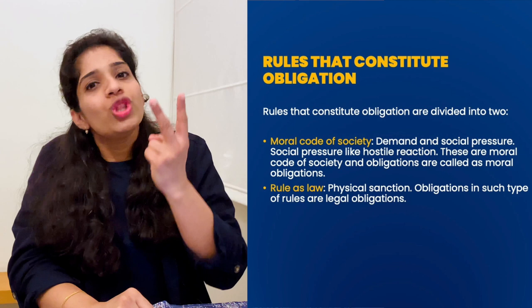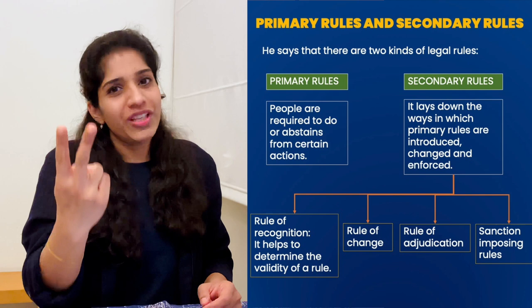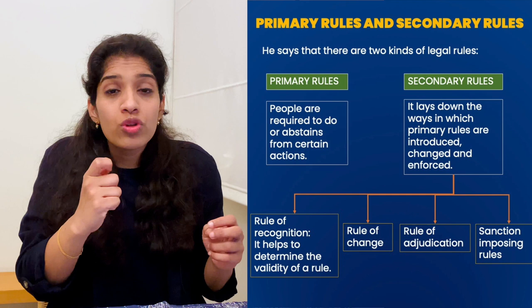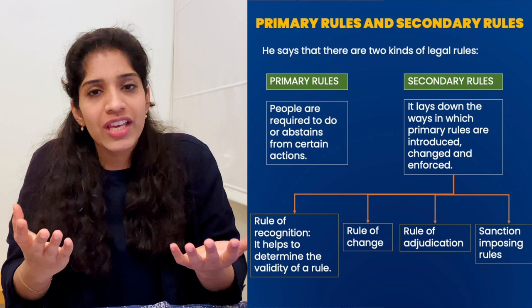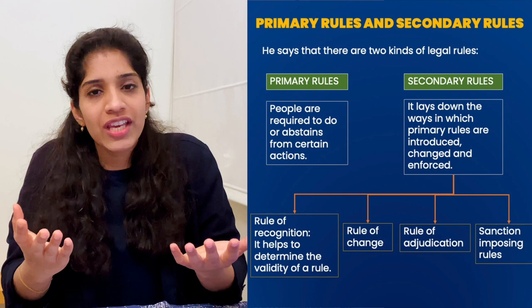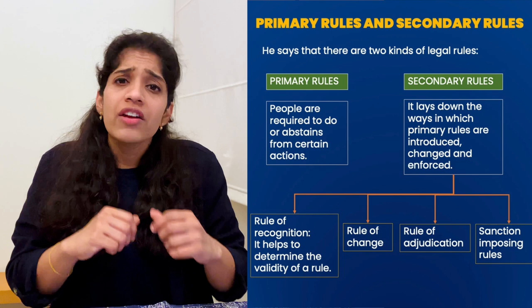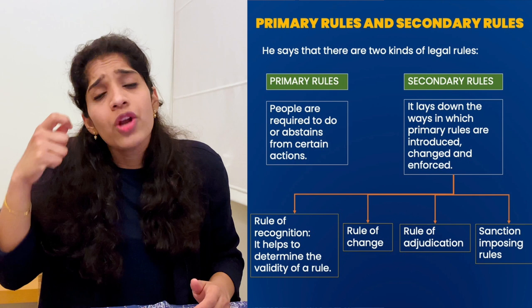अब sixth step में Hart law को दो तरीके से divide करते हैं। वो कहते हैं law is a set of rules — दो तरीके के rules: primary rules और secondary rules। Primary rules वो rules हैं जो duty impose करते हैं — individuals को बताते हैं कि उन्हें क्या करना चाहिए और क्या नहीं करना चाहिए। ये duty imposing rules होते हैं। अगर किसी society में सिर्फ primary rules ही exist करें तो काफी सारे problems आ सकते हैं — जैसे नया rule कैसे आएगा?